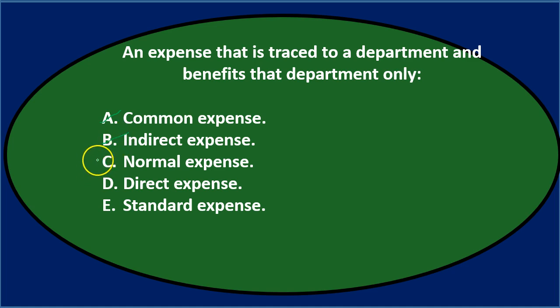C says a normal expense — that might sound reasonable. D says a direct expense. Between B and D, direct sounds more correct than indirect. And E says a standard expense. Normal and standard are two words that sound like they could be reasonable, but they're not standard terminology here.